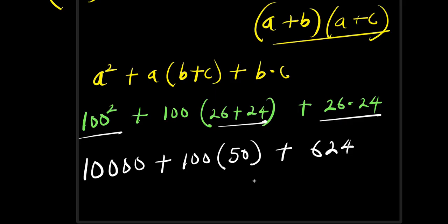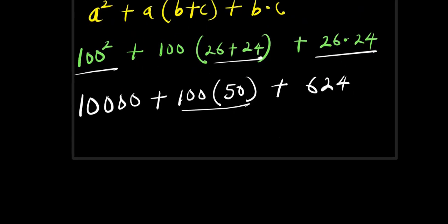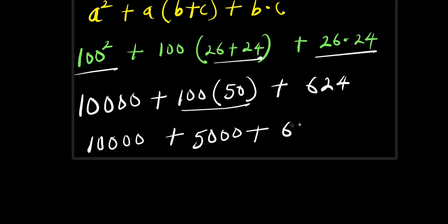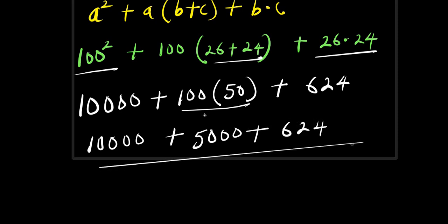The next step is to multiply out: we have 10,000 plus 5,000 plus 624. Adding these three together: 10,000 plus 5,000 is 15,000, and 15,000 plus 624 is 15,624.